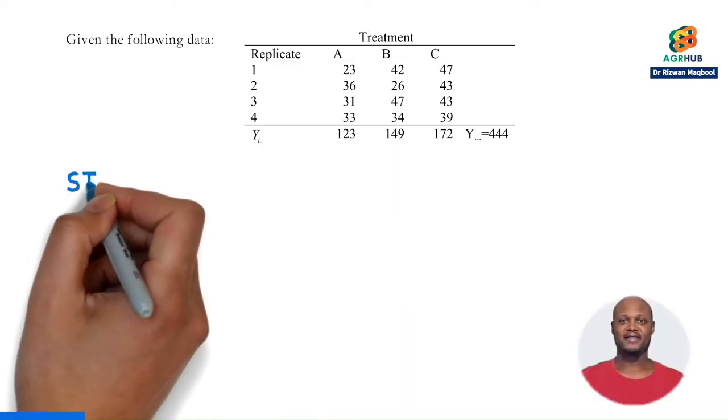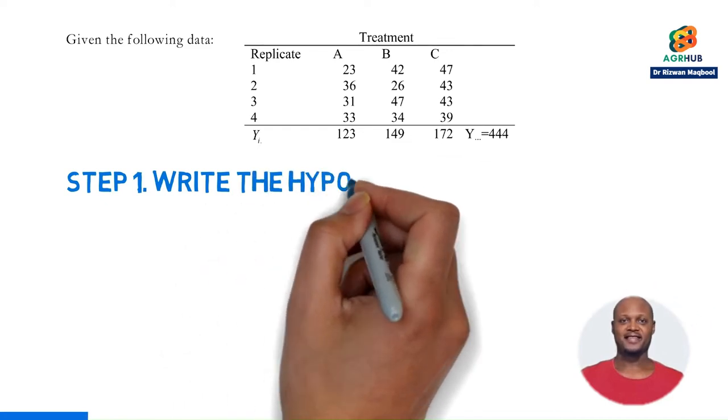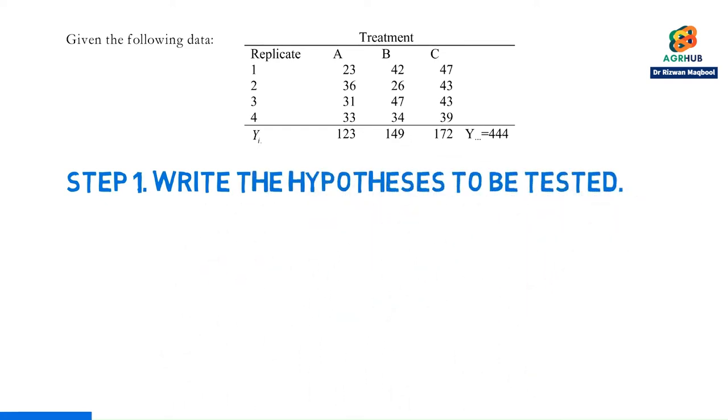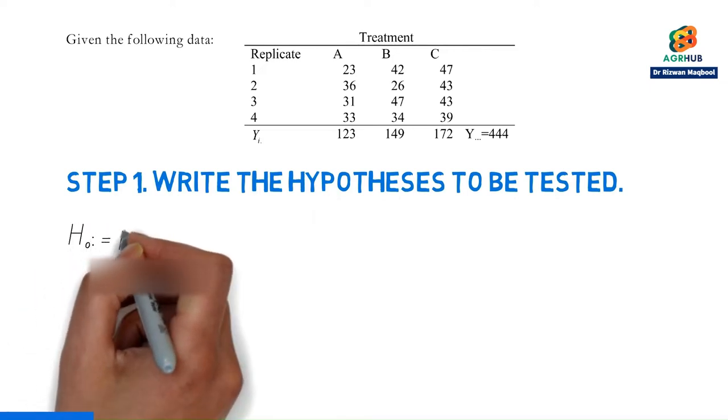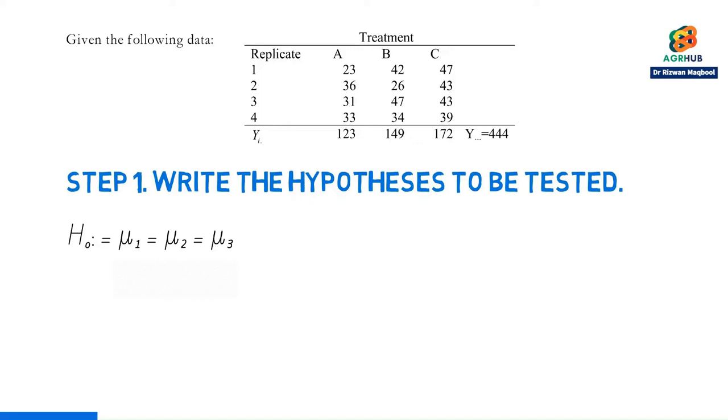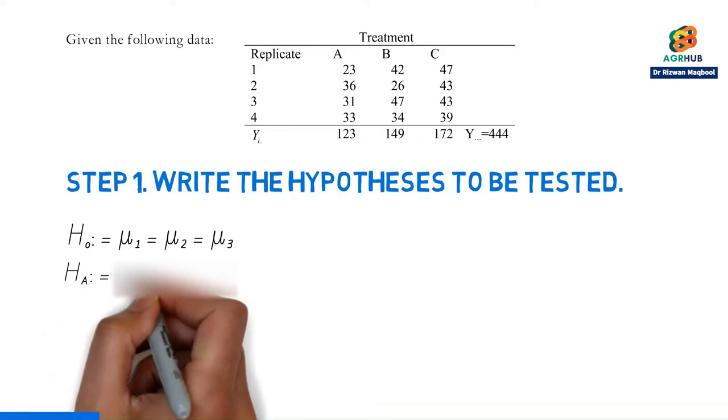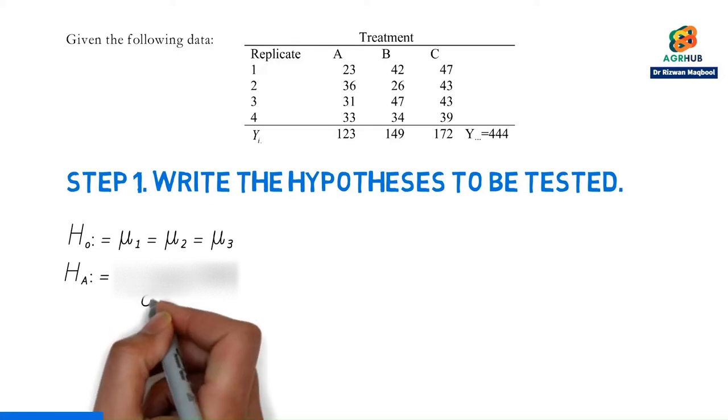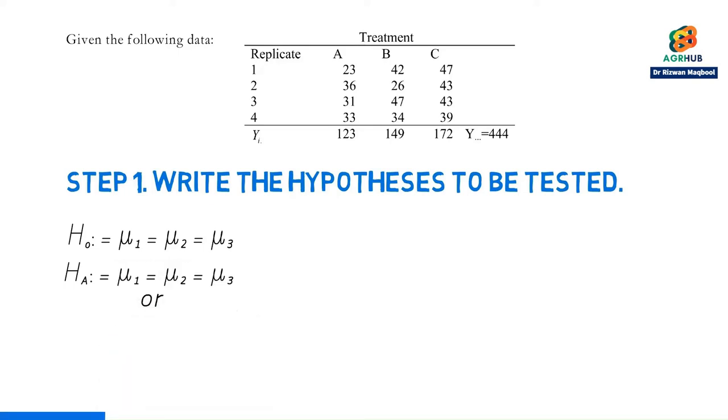Step 1. Write the hypotheses to be tested. We need to start by stating our claim that one of the fertilizer formulations is significantly different from the other two. Our null hypothesis is then that all three means are equal, and the alternate hypothesis is that at least one of the means is different.